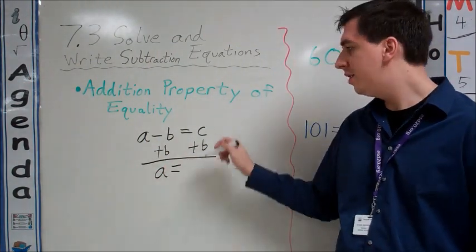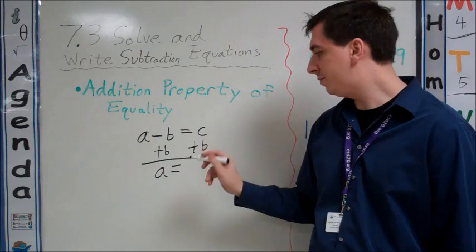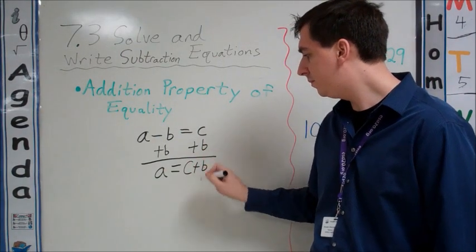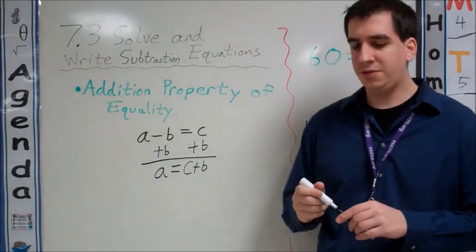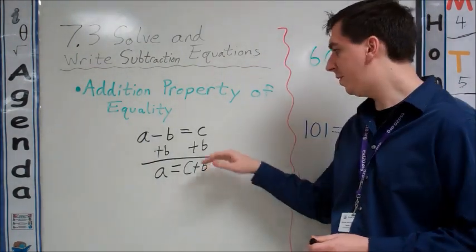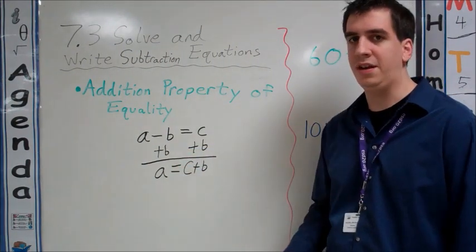I'll just have A on the left side. Since C and B are not like terms, we need to keep them separate from each other. So we can have A equals C plus B. We notice our equality here when we do plus B on the left side and plus B on the right side.